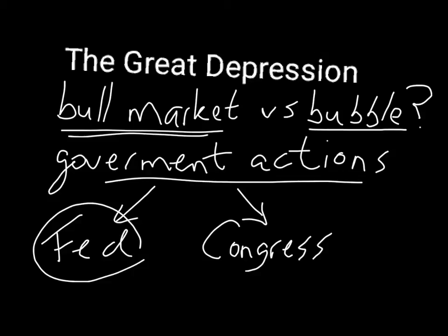Congress also didn't help very much. They actually raised taxes. Some people within Congress wanted to keep a balanced budget, which is understandable — it's a noble goal — but at that time it led to increases in taxes, which also didn't help the main economy. In addition, they raised tariffs and quotas, what we call protectionism. Other countries started to do the same thing, and all that would do is lead to higher prices, less competition, less productivity. So the actions by the Fed and Congress really exacerbated things and led to an even further contraction in real GDP.